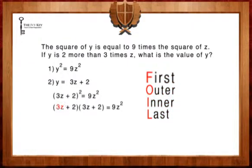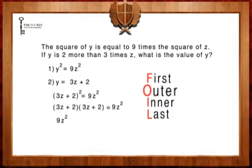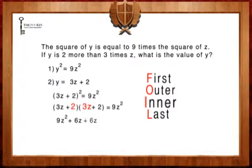Our first terms are 3z and 3z. 3z times 3z leaves us with 9z squared. Our outer terms are 3z and 2. 3z times 2 leaves us with 6z. Our inner terms are 2 and 3z. 2 times 3z leaves us with 6z. And our last terms, 2 and 2. 2 times 2 leaves us with 4.